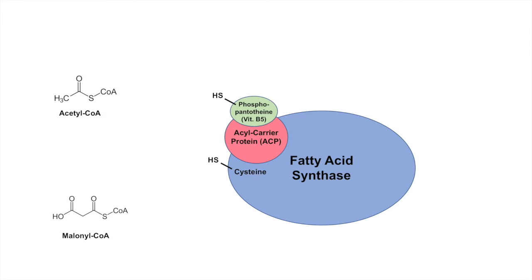Fatty acid synthesis occurs on a giant protein complex known as fatty acid synthase. Fatty acid synthase is about 250 to 270 kilodaltons in weight, so it is very large. It is composed of several different moieties. One is an acyl-carrier protein, or ACP, which itself has a vitamin B5-derived component called phosphopantetheine. Another important binding point on this protein complex is through a cysteine residue. Once we have acetyl-CoA and malonyl-CoA from the acetyl-CoA carboxylase reaction, we can go through one cycle of the fatty acid synthase protein complex.